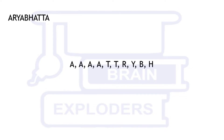In RAABHTT, we have four A's, two T's, one R, one Y, one B, and one H. In total we have ten letters, and we have to select four out of them.